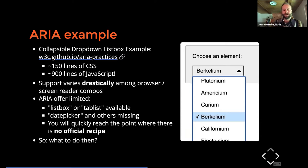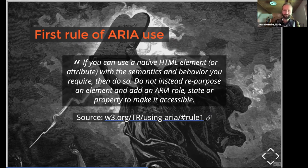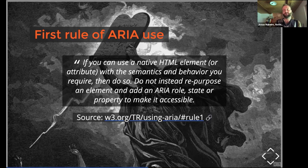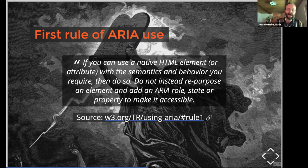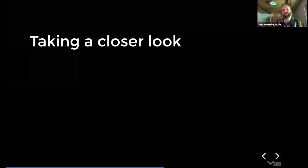It's obvious you can't rely exclusively on ARIA — there must be other ways of offering accessible interactive patterns. This is the perfect moment to introduce the first rule of ARIA, from the W3C: 'If you can use a native HTML element with the semantics and behavior you require, then do so. Do not repurpose an element and add an ARIA role, state, or property to make it accessible.' Simply put: if a native HTML element does what you're trying to achieve, please use it. And as you'll see, there nearly always exists such a native element, even when not obvious at first sight.